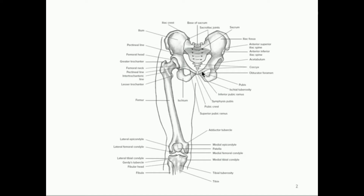The pubis on each hemisphere is connected by the symphysis pubis, or pubic symphysis. This was one of our amphiarthroses — a slightly or only partially movable joint. Not totally movable and not totally immovable; it's right in the middle.